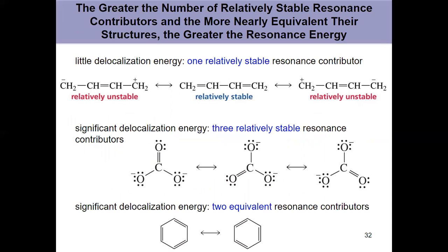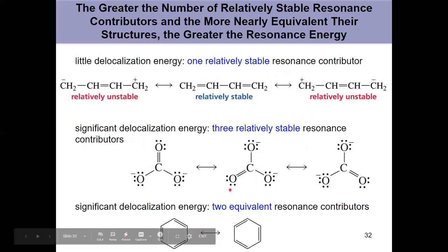For the diene compound with three total resonance contributors — one stable and two unstable due to separation of charge — that doesn't have a whole lot of delocalization energy, because it only has one relatively stable resonance contributor. Versus carbonate, CO3²⁻, with three relatively stable resonance contributors — that has notable delocalization energy. As does benzene, with two equivalent resonance contributors and significant delocalization energy.